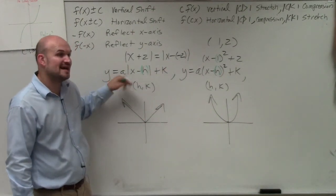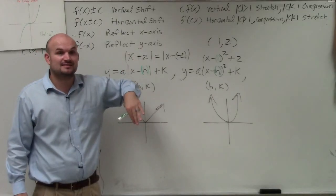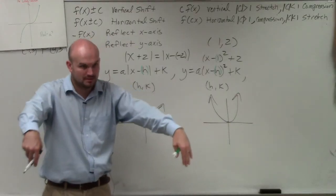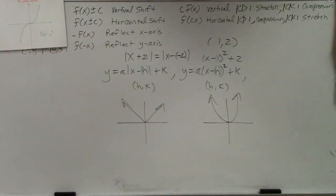And then remember, if a was negative, that reflected over our x-axis. Correct? Remember, if you have negative x squared, the parabola opens down. OK? These are all things to review from your Algebra 2 class.